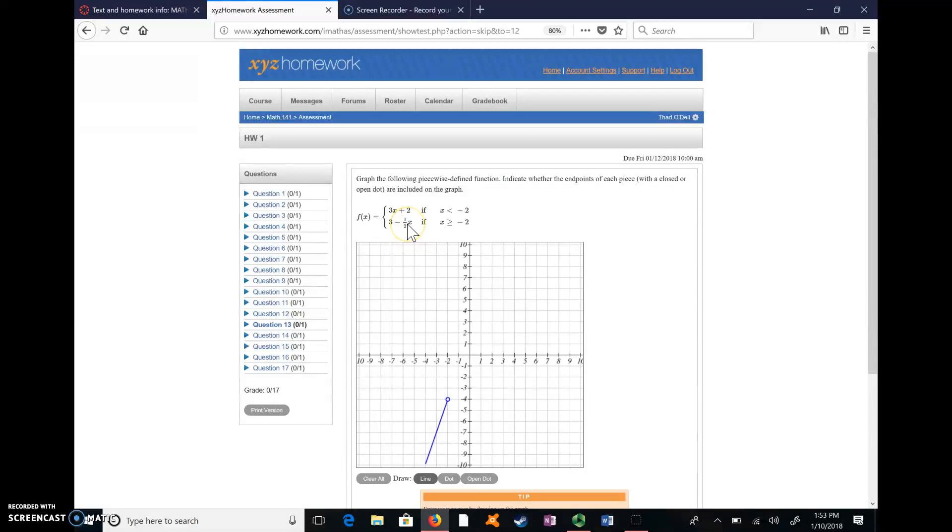Then we go up to this one here. This is also a line. It has a Y intercept of 3 and a slope of negative 1 half. At negative 2, if I plug negative 2 in there, I get negative 1 half times negative 2 is positive 1. So that would be 3 plus 1 is 4. So I'm going to want a closed dot at negative 2 comma 4. Why is it closed? Because this says X is greater than or equal to. So I can plug negative 2 in here, and when I do, I get 4.